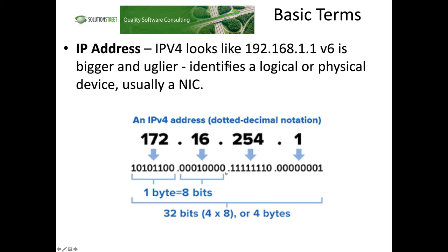IP address: Internet Protocol V4 looks like this — it's four octets, like 192.168.1.1. V6 is big and ugly, but it's the same concept — just a very large number so that we can have a lot more addresses. Typically we use an IP address to get to a NIC, so it's a way to use routing and find an actual network interface card out on the Internet.